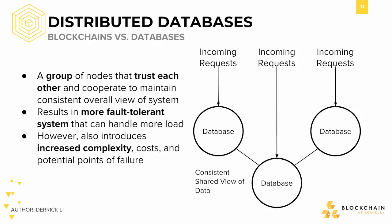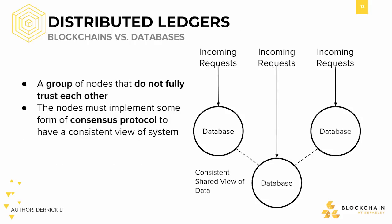However, distributed databases also introduce increased complexity, cost, and redundancy, as well as exposing more points of failure — and that's just the overhead of being distributed. A specific type of distributed database is a distributed ledger, which contains nodes operated by different entities that may or may not trust each other.